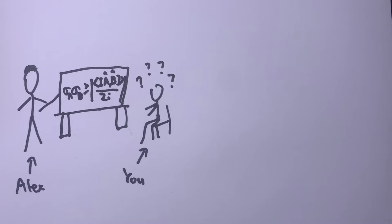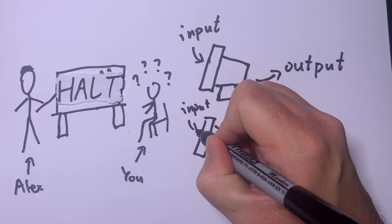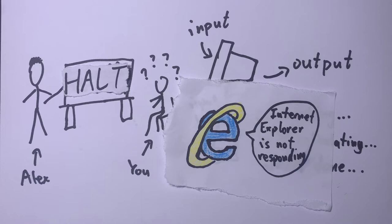When given an input, a computer program can either finish running after a while or just run forever. It's just like Internet Explorer. The question is, can you write a computer program to decide whether another program will eventually stop?